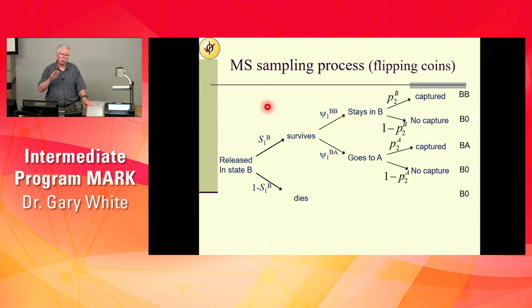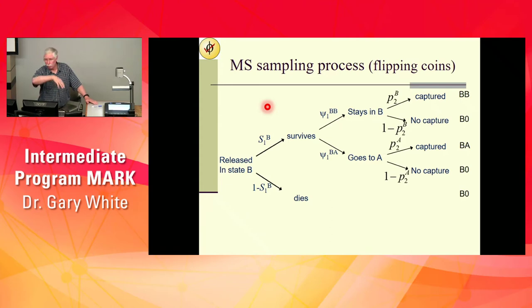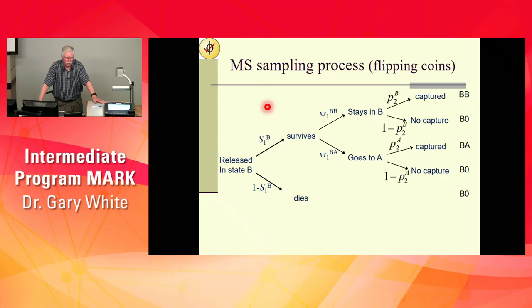Breeding/non-breeding is a classic case. With albatrosses, for example: they breed on the island, we go out and sample, and we detect animals on the island. They transitioned into the breeding state just before we started sampling — they were either in a non-breeding or breeding state before they came to the island.